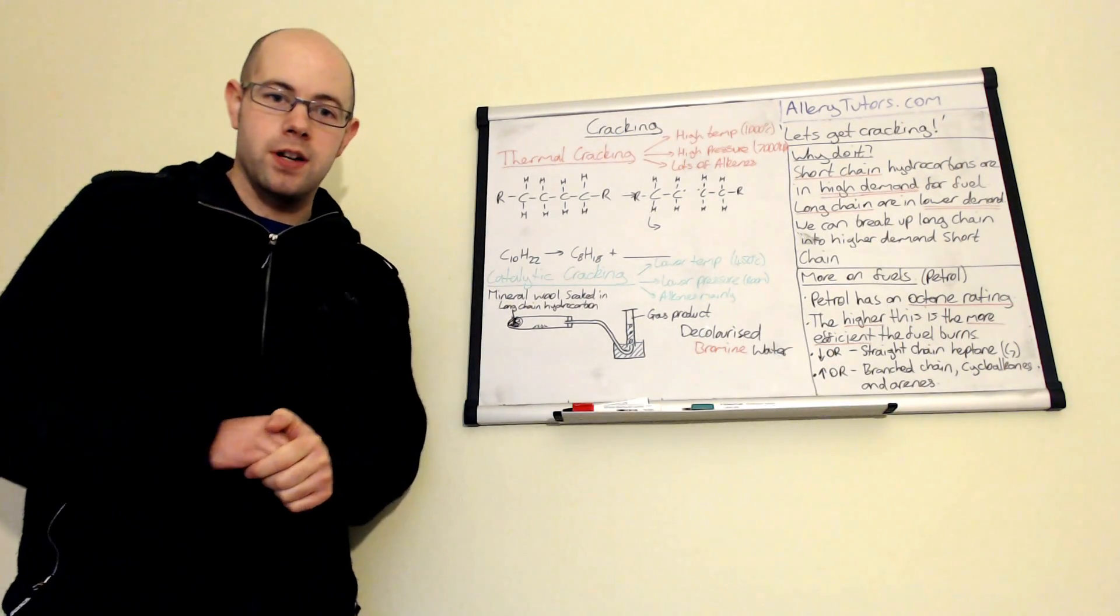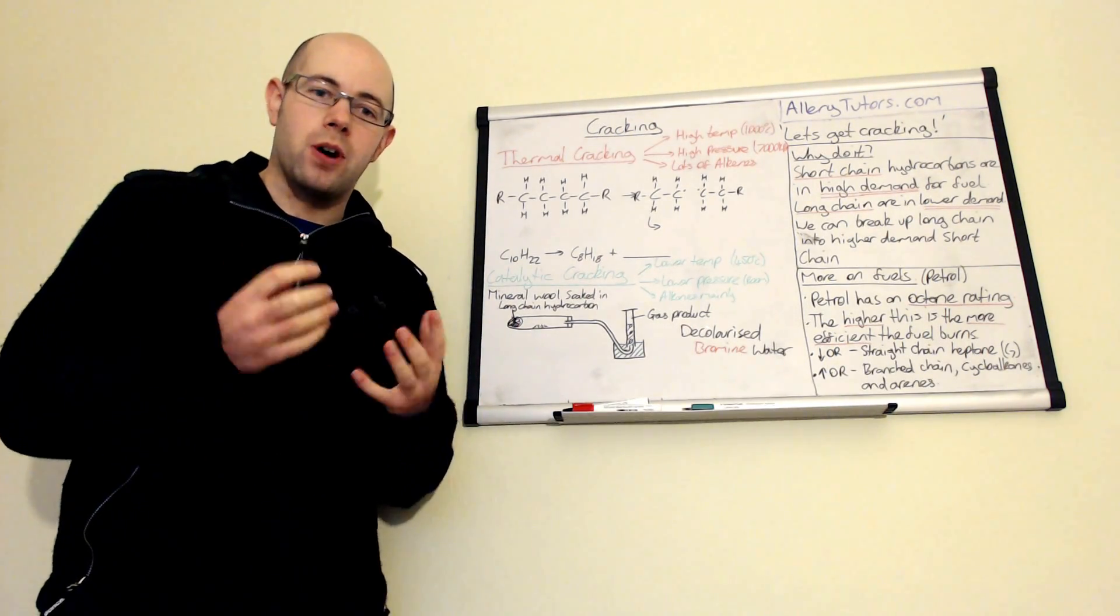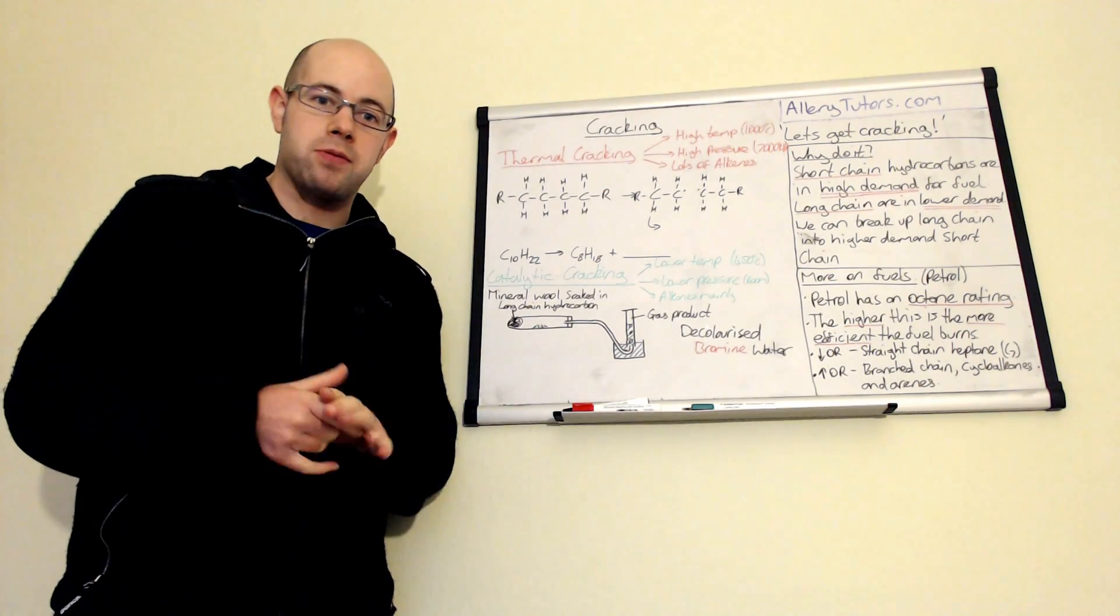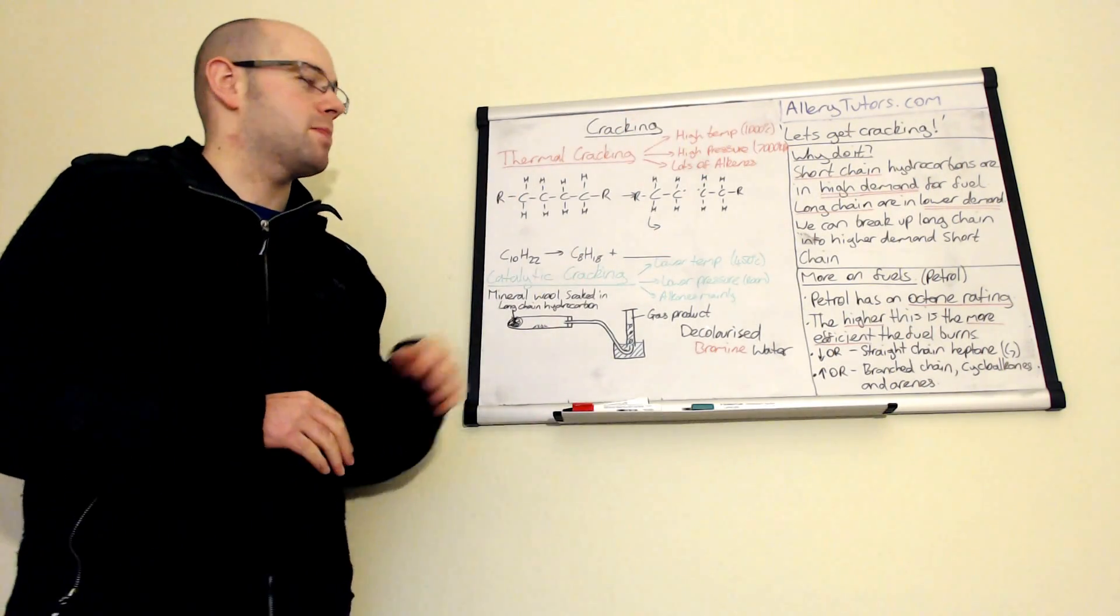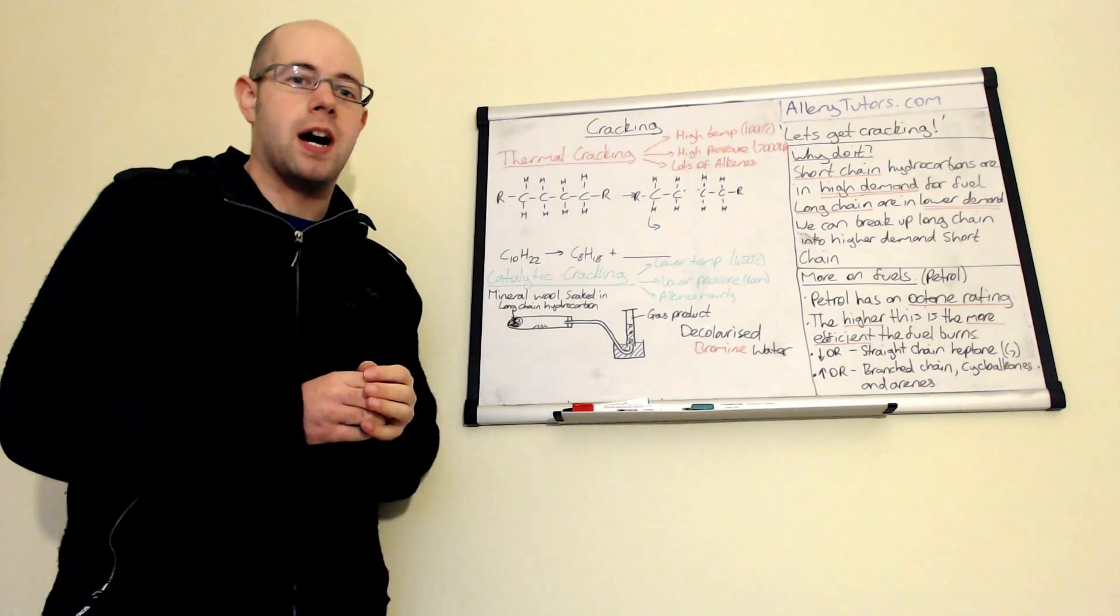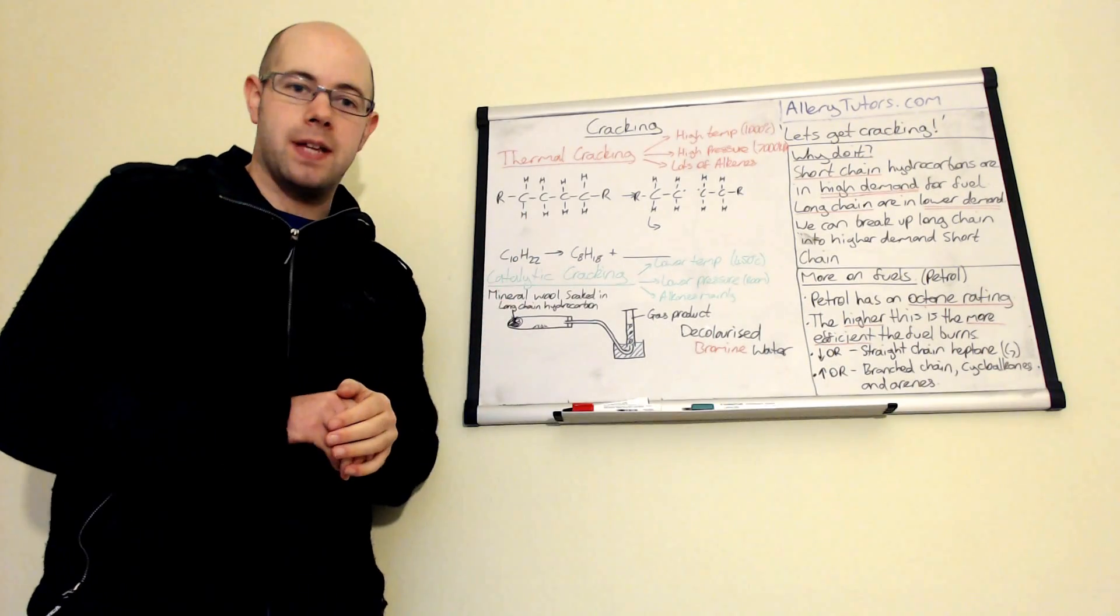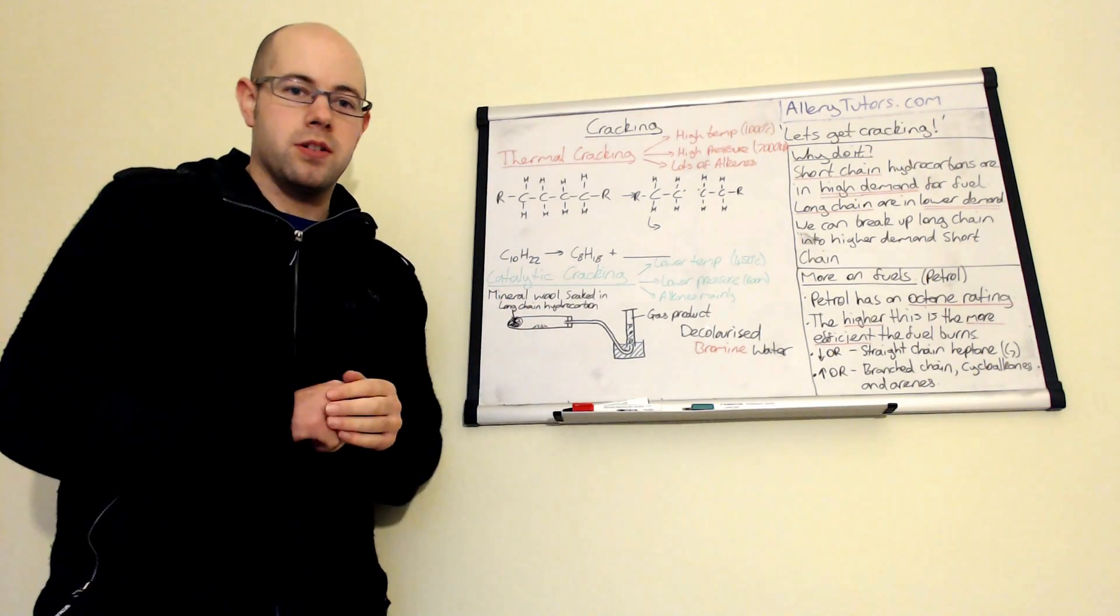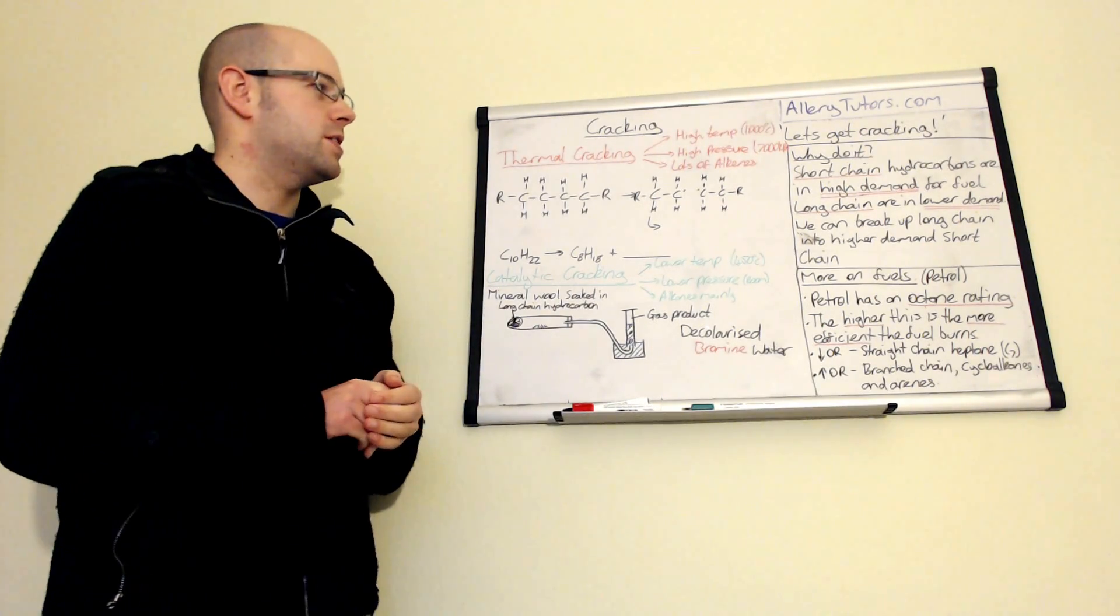Let's look at thermal cracking first. Thermal cracking, as the name suggests, involves a lot of heat. You need high temperatures, normally about 1000 degrees Celsius. The pressure is about 7000 kilopascals, which is incredibly high pressure. The products of this reaction are mainly alkene based, with a hydrocarbon double bond. These are unsaturated hydrocarbons.